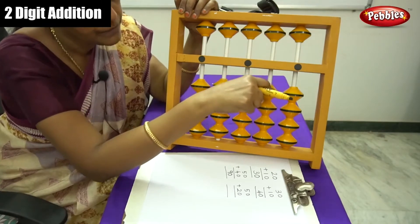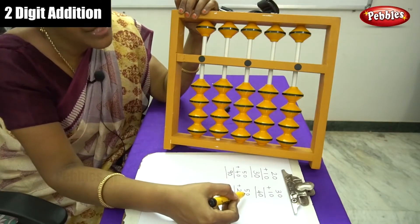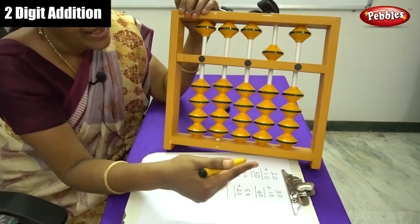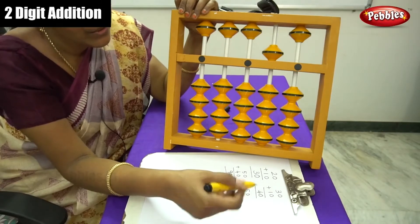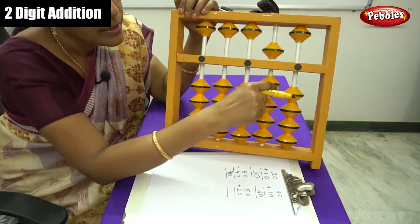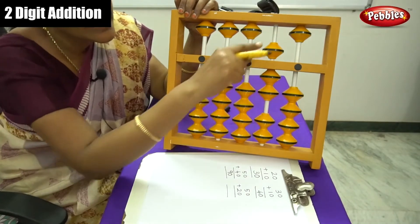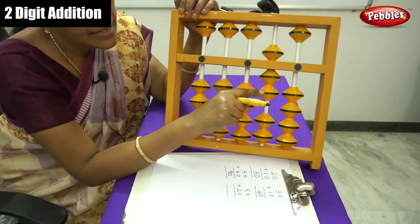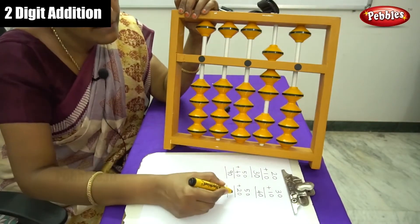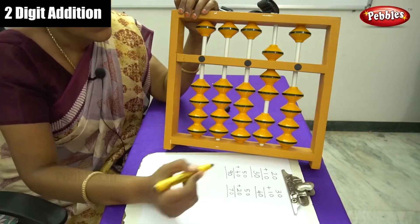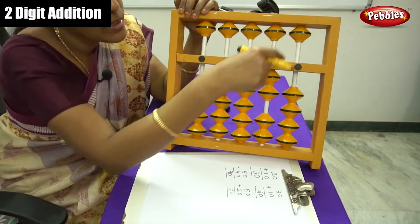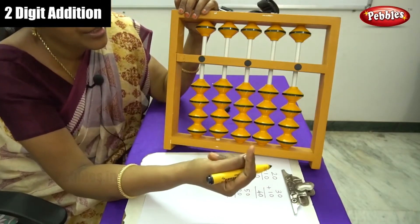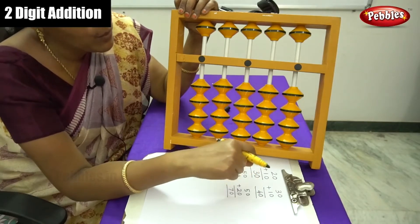Reset to zero level. The first number is 50 — move five beads to show 50. Next, add 20: move 2 beads — 10, 20. The answer is 70. Move back to zero level. That completes the two-digit number addition with tens-ending numbers.